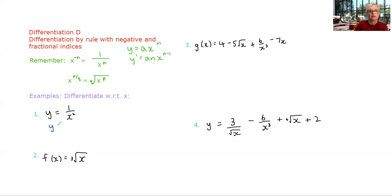So before we even differentiate this, we need to change this into index notation. So we need to recognize that one over x squared is x to the negative two. Once we've done that, now we can differentiate using the rule.